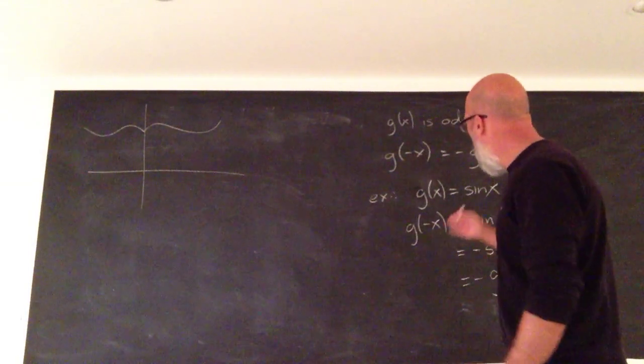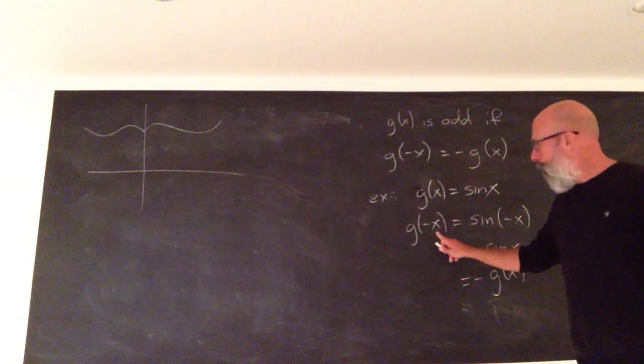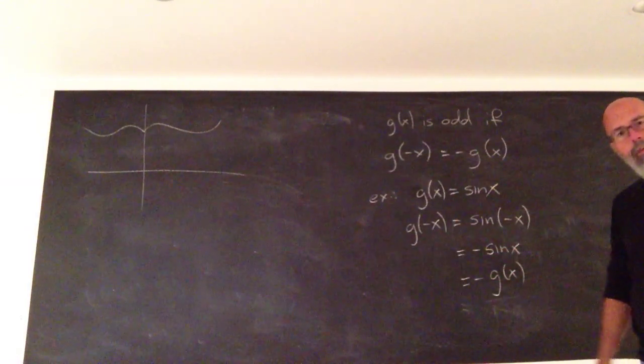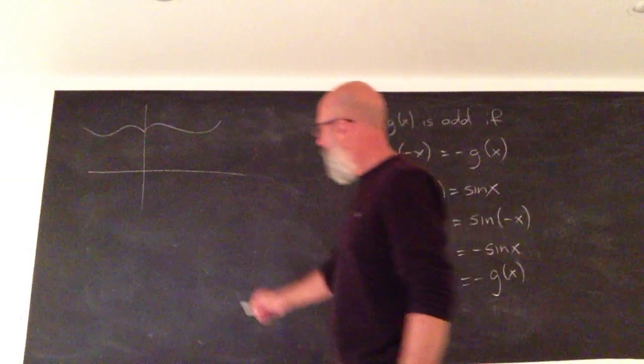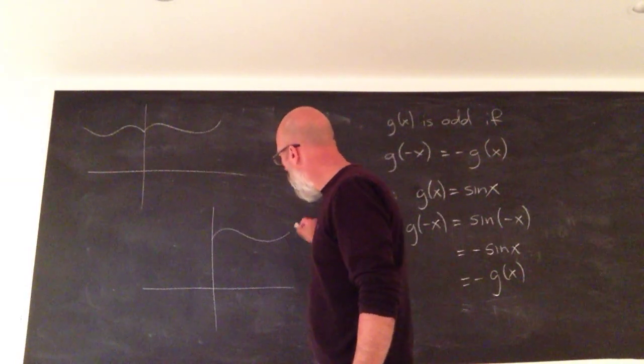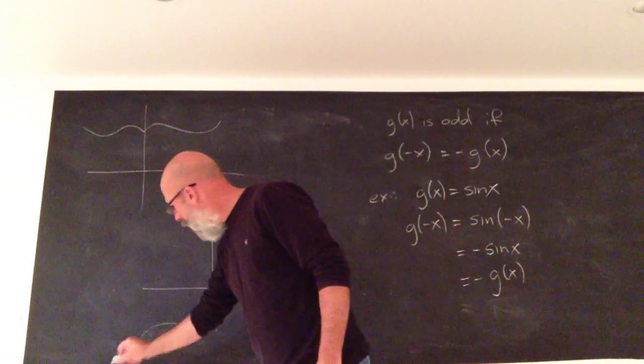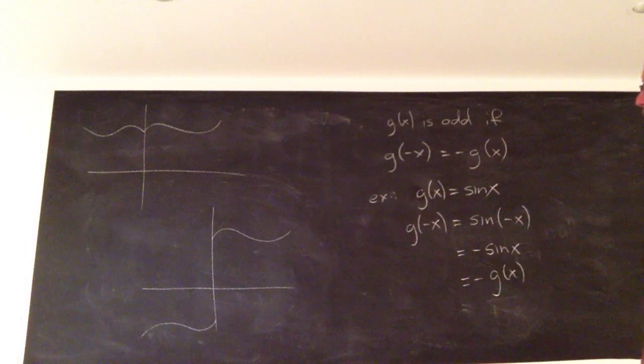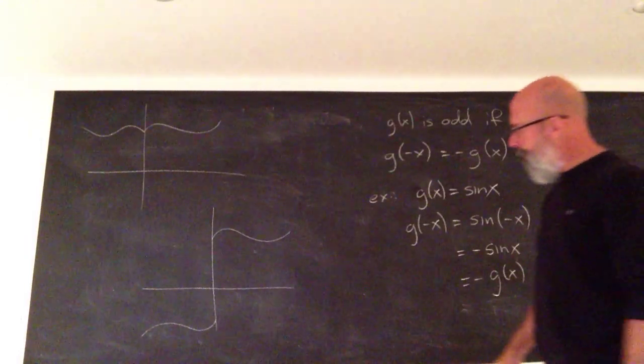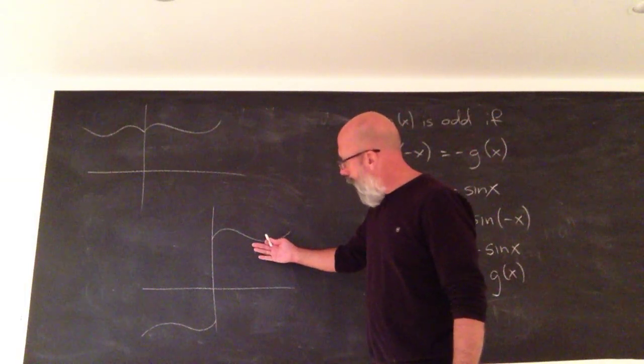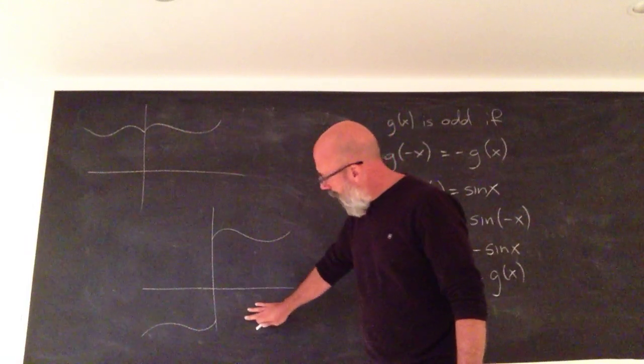What about for an odd function? If you plug in a negative value, it's negative of its positive value. So whatever happens here, negative of that happens over there. So you have this sort of symmetry.